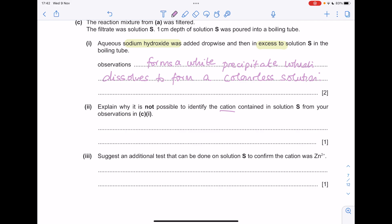Explain why it's not possible to identify the cation containing your solution S from your observations in C part 1. Because there are other cations that behave like this, such as aluminium would also produce the same result.